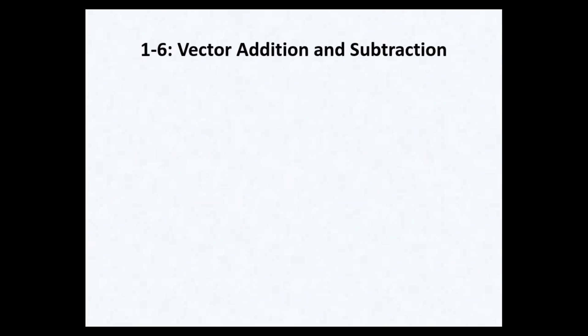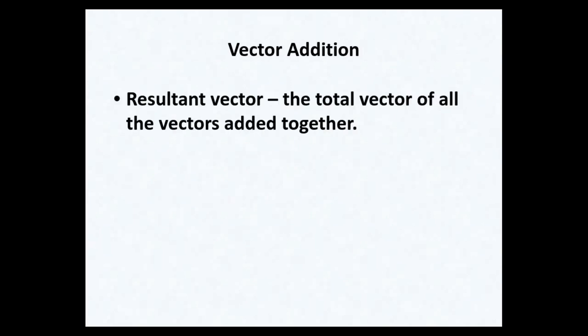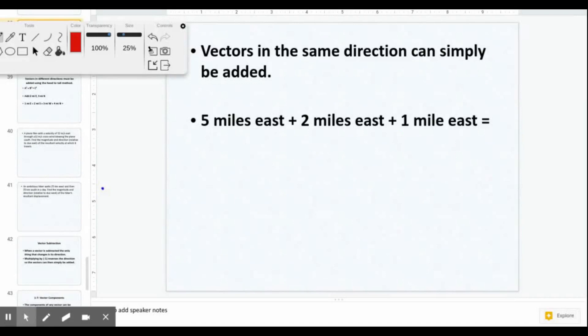Now we'll look at how to add and subtract vectors. Typically when adding and subtracting we can just add or subtract numbers, but with vectors we also have to account for direction. For vector addition, we find the resultant vector by adding all vectors together while accounting for direction. In this first example of simple vector addition, we have five miles east, two miles east, and one mile east — all in the same direction. So I'll draw out my vectors, starting with five miles east.